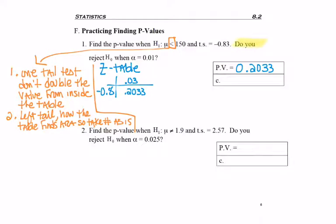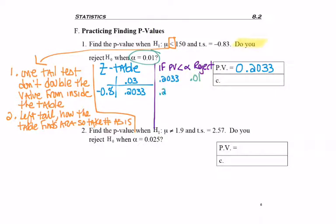The second step is: do I reject H0 when alpha is .01? If the p-value is less than alpha, we reject — that's the decision-maker. My p-value is .2033 and alpha is .01. Some people struggle comparing a two-digit number to a four-digit number, so it helps to add zeros to the end, giving you .0100. Comparing 2033 to 100, you can clearly see it's not less than, so we fail to reject H0. Always put H0 at the end of your statement.